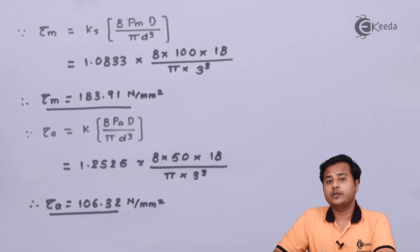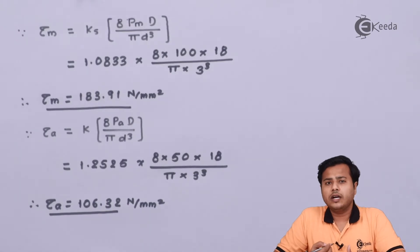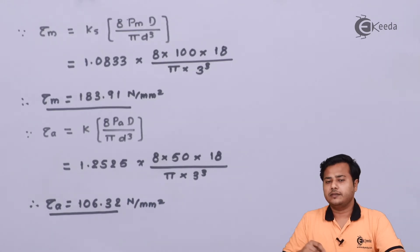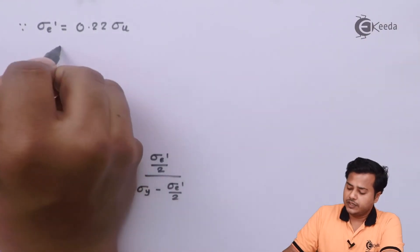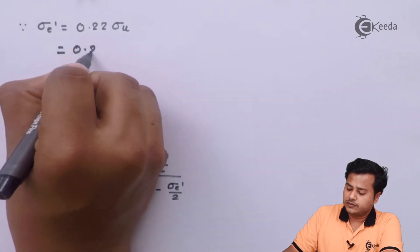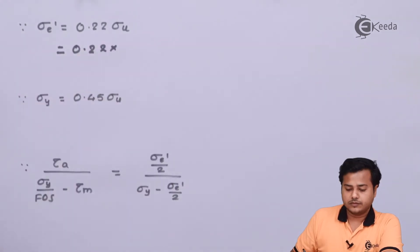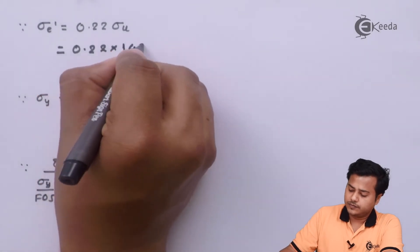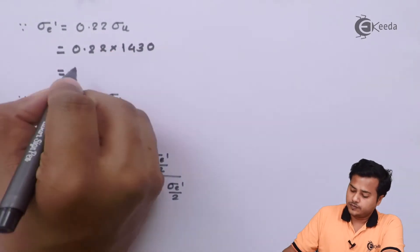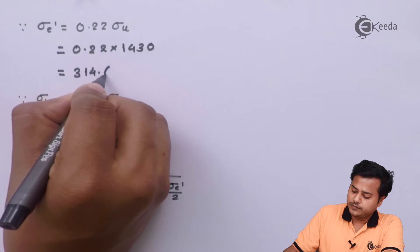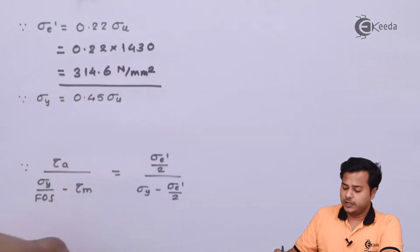The next step is to find out the relation between them based on the given material. Now we have been given oil-hardened and tempered material where the relation of the yield stress and the endurance value of the stress are different. Using these relations, let's find out the values.